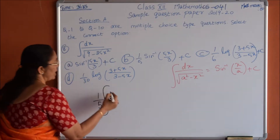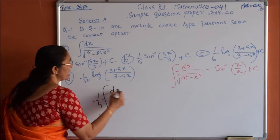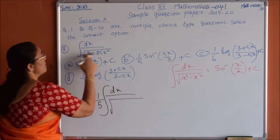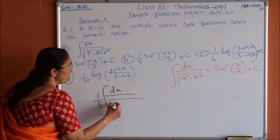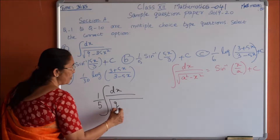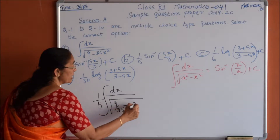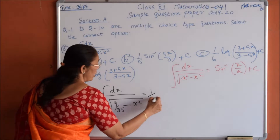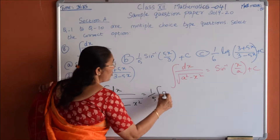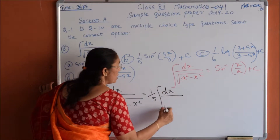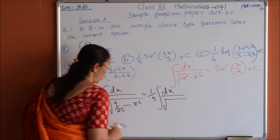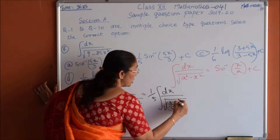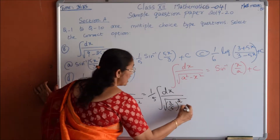So we have 1 by 5 integration of dx divided by root over — since we have taken 25 outside, this will become 9 by 25 minus x squared. This can be written as 1 by 5 integration of dx divided by root over, where 9 by 25 is (3 by 5) whole squared minus x squared.